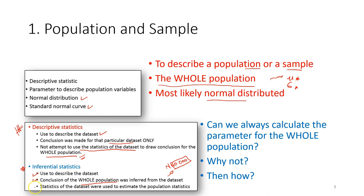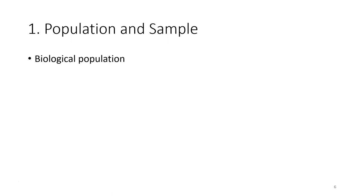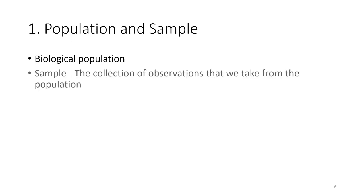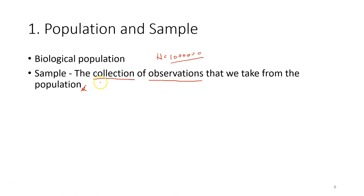We can use the statistic of a data set to estimate the population statistic. The population in the context of this course is a biological population. The sample is a collection of observations taken from the population. Let's say your population is 1 million students — we need to take a sample. The sample size is the number of observations. For example, if we take 1,000 students, that collection is our sample.